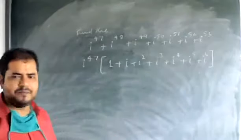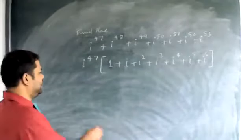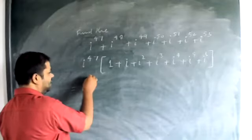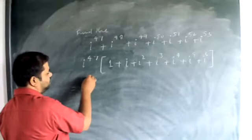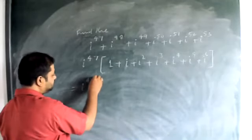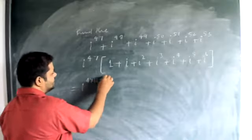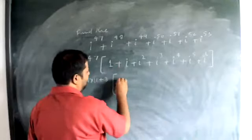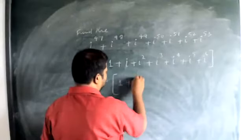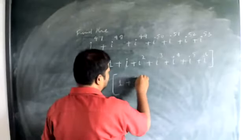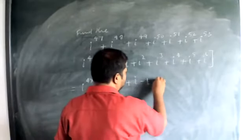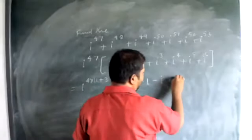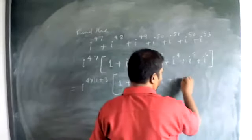Okay. Now, i to the power of 47 — that means 4 into 11 plus 3. This gives us 1 plus i, minus 1, minus i to the power of 8 (which is plus 1), and i to the power of 5.